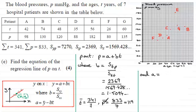Well we know that this point would lie on this line and so it satisfies the equation. So just by substituting these values in place of P and T and rearranging, we get that A equals the mean of P minus B times the mean of T.